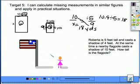Well if we look at this as a picture, Roberta is 5 feet tall. So from here to here, Roberta is 5 feet tall. Her shadow is 4 feet. And if I connect that, we have a triangle.